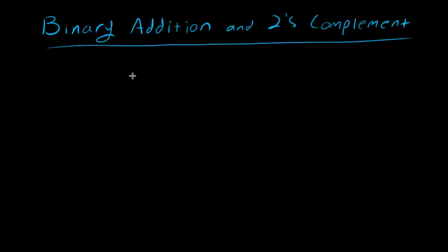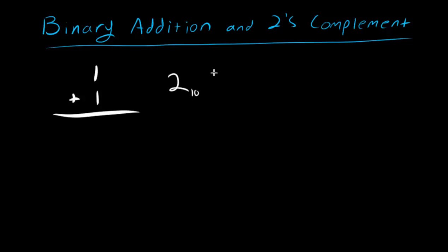Let's get on to simple binary addition. If you can add 1 plus 1 in binary, you'll be able to add any number in binary. So let's do that. In decimal, 1 plus 1 is of course equal to 2 in base 10, which is 1 0 in binary.